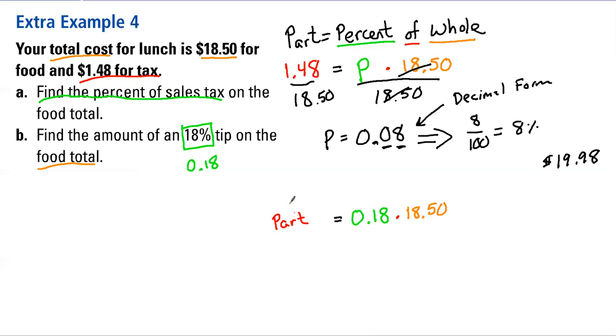Whatever that is, and make sure we're clear here, this part for this specific problem would be my tip. I'm trying to find what the tip would be. So let's type that into our calculators. If we take 18.5 times 0.18, we are going to get a tip that is $3.33.